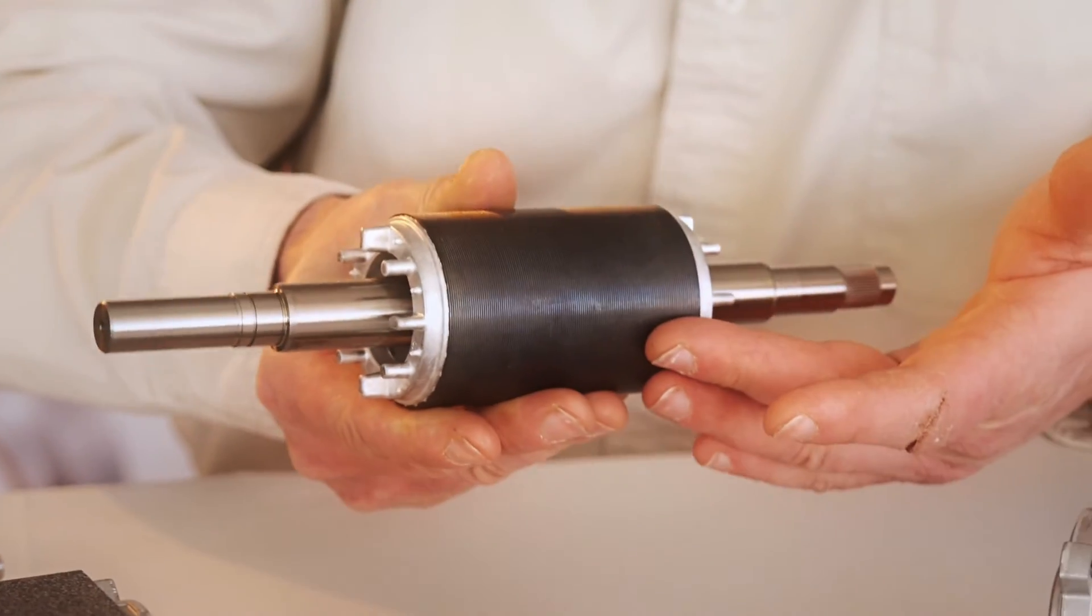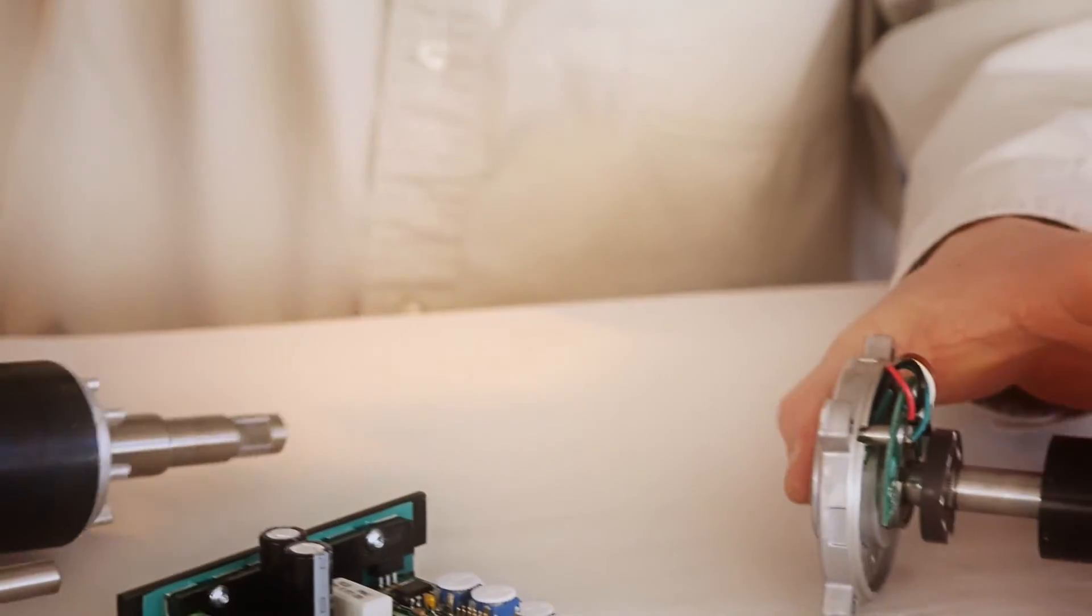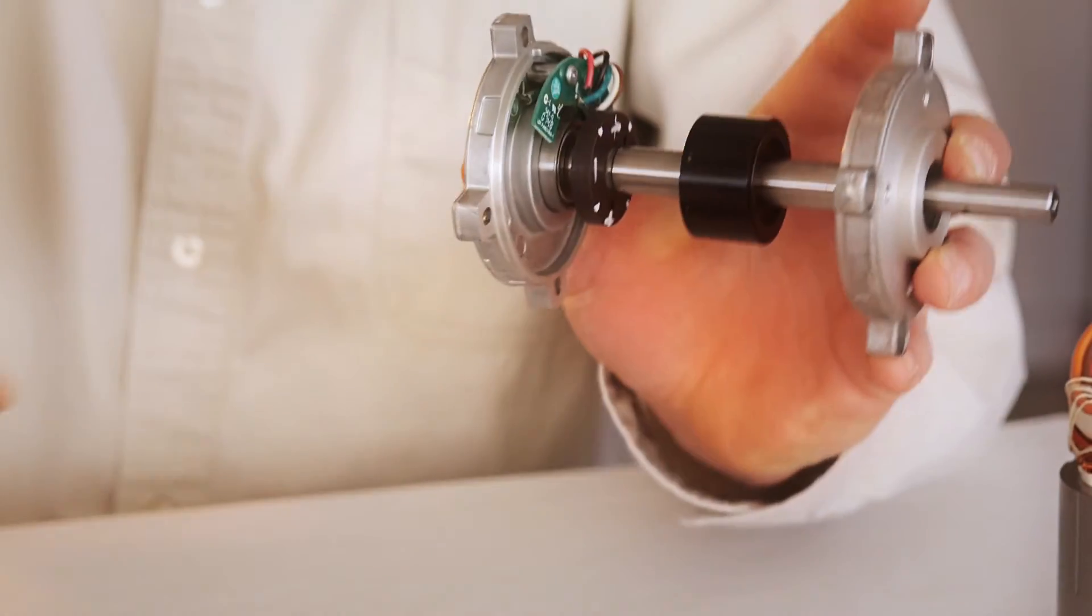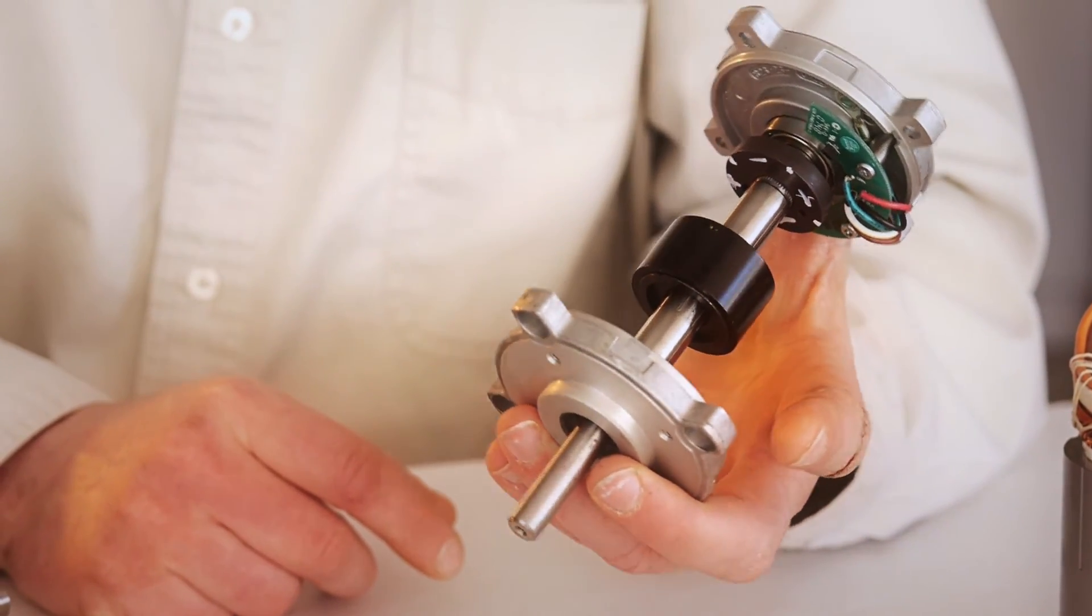The induction motor is made up of stack laminations, and the slots in the laminations are cast with aluminum or copper. The BLDC motor is constructed using permanent magnets. Both designs are considered maintenance-free because the only wear item is the bearings, which are lubricated for life.